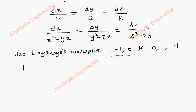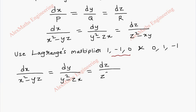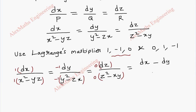We have to multiply each multiplier with both numerator and denominator and write the new terms. Using the first multiplier (1, -1, 0), we add all the numerators. The numerator becomes dx minus dy plus 0, and the denominator is x² minus yz, minus y² (with the minus sign taken inside) giving plus zx.